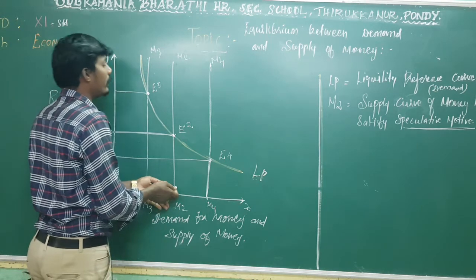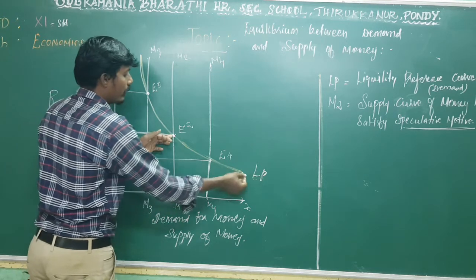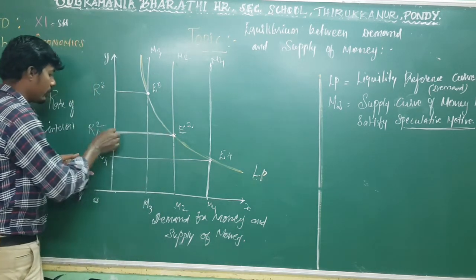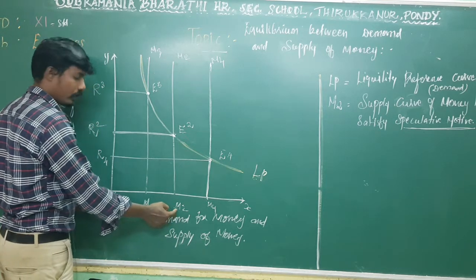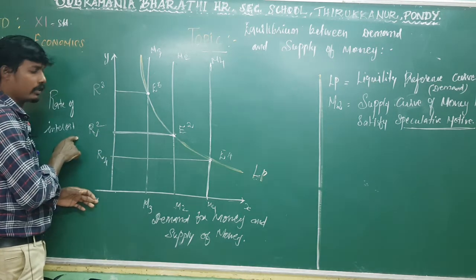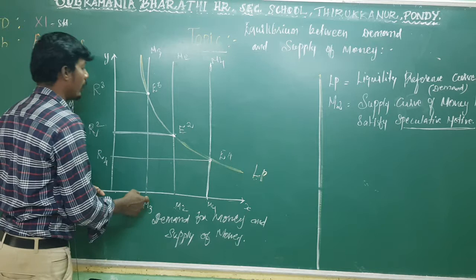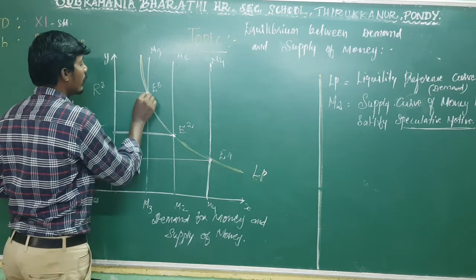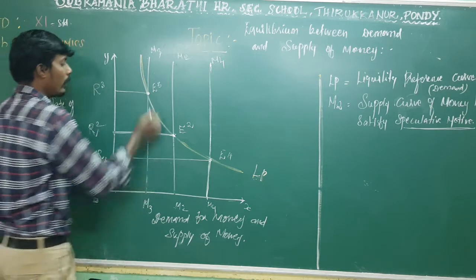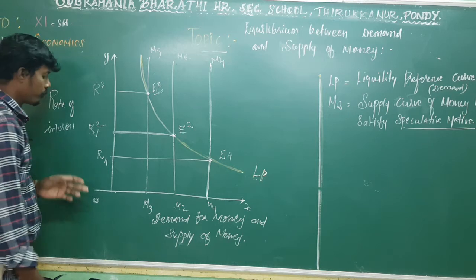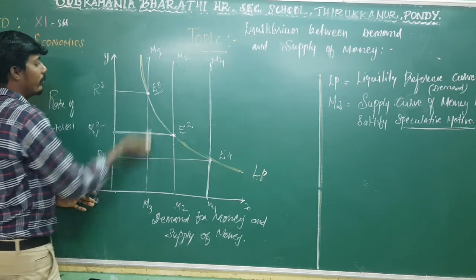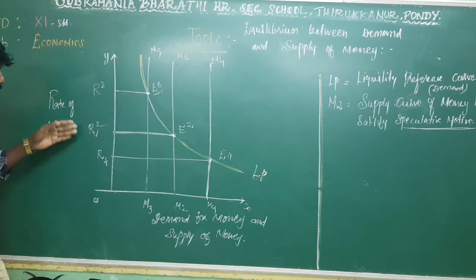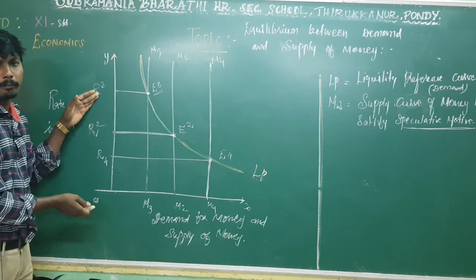If you go to the middle of the supply of money, M2 is the same LP curve. That is why E2 corresponds to R2 rate of interest. M2 level gives R2 rate of interest. At the same time, M3 supply curve gives a different rate of interest — from left to right, the vertical line corresponds to R3 rate of interest. That is why E3 is established.